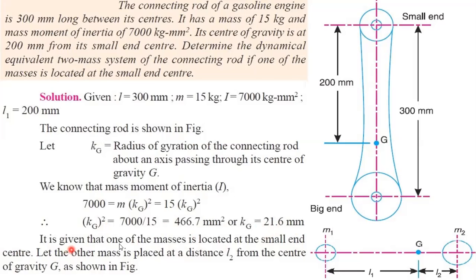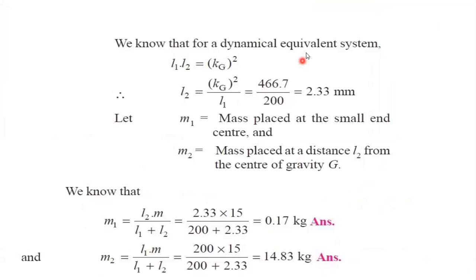It is clearly given that one of the masses is located at the small end. So we consider the other mass placed at a distance of L2 from the center of gravity. Using the third condition for a dynamically equivalent system — derived in the previous video — L1 × L2 equals kg² (radius of gyration squared). We know kg and L1, so we can find L2.